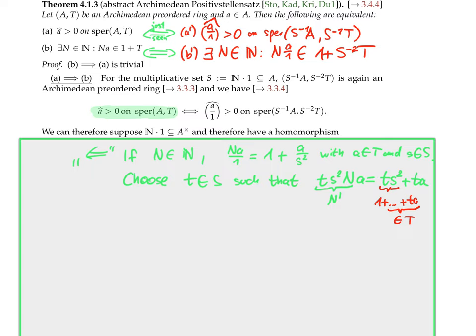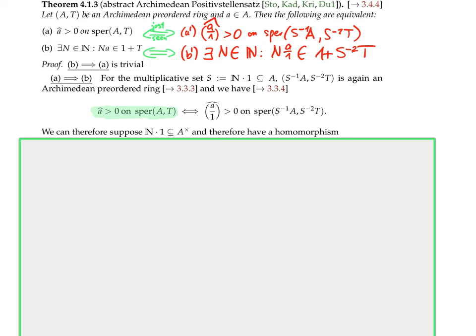This is a typical proof in real algebra: you need to find an identity that is just one or two lines but which you may have searched for weeks or even longer. So that's the main theorem for today, but we want to draw a corollary.